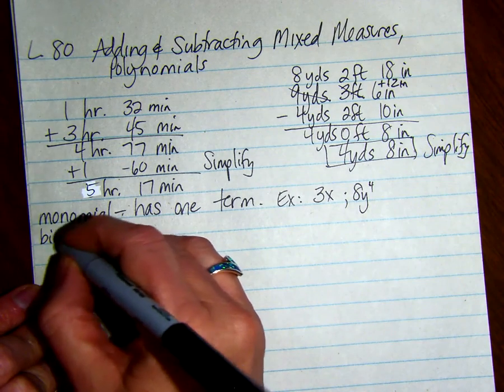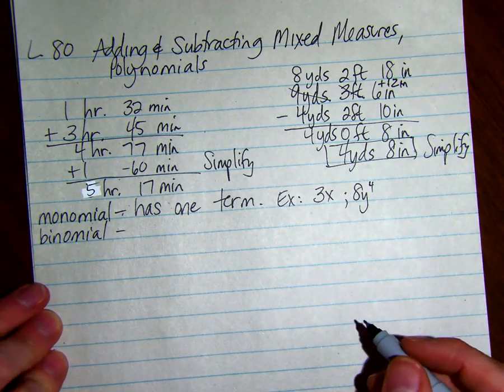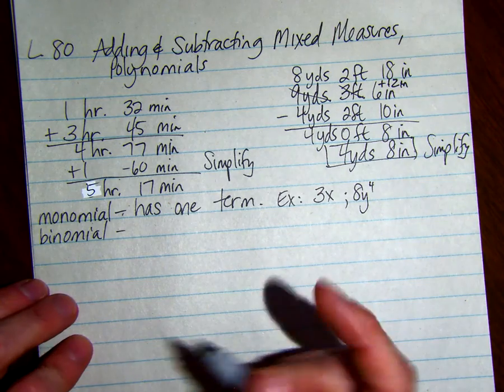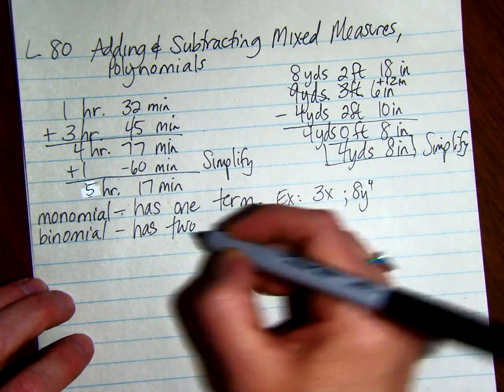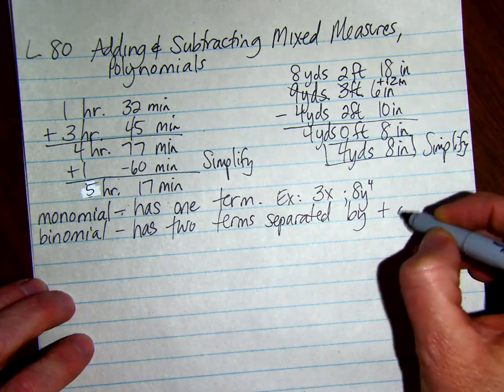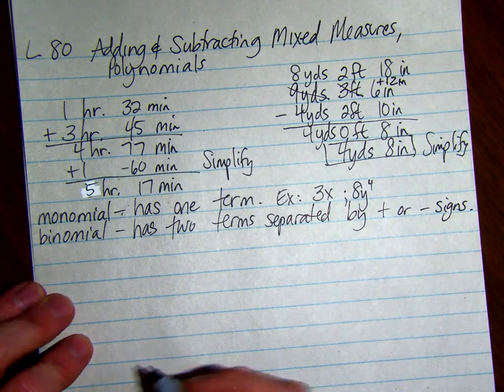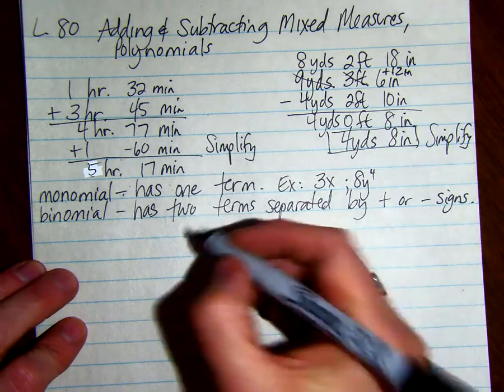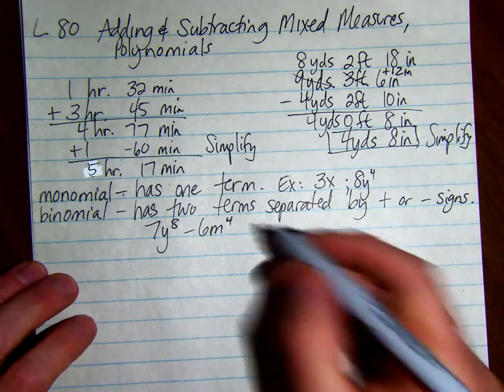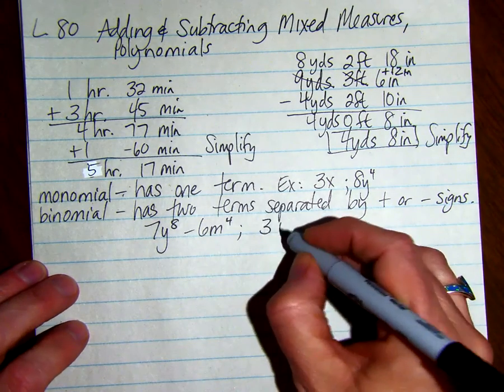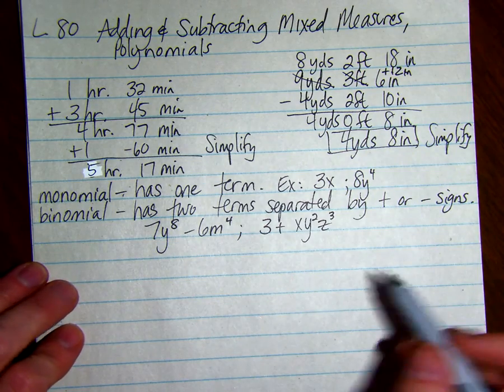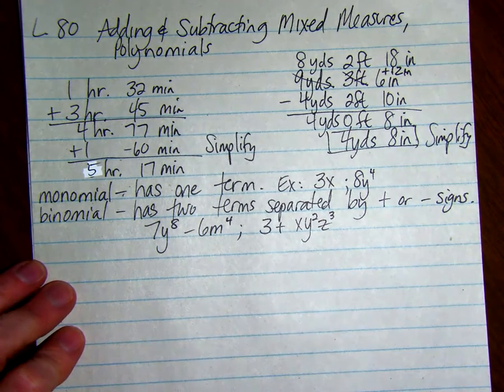Then we have what's called a binomial. A binomial has two terms separated by plus or minus signs. Here's an example of a binomial: 7y to the 8th minus 6m to the 4th. Another one would be 3 plus xyz squared. There's two terms separated by a plus sign, and this one's separated by a minus sign.